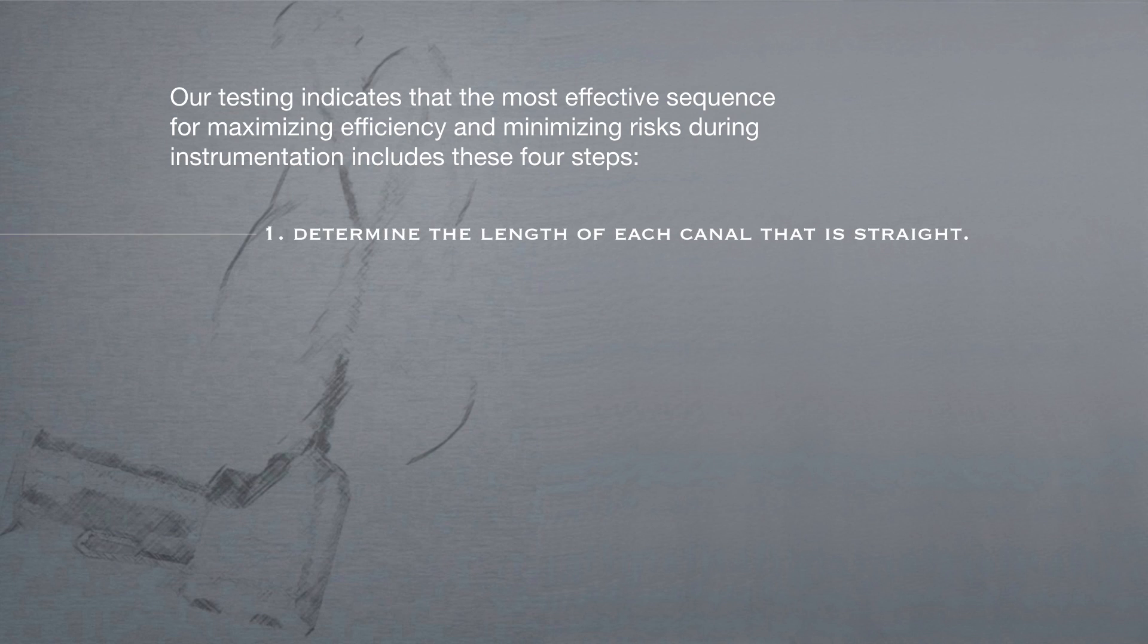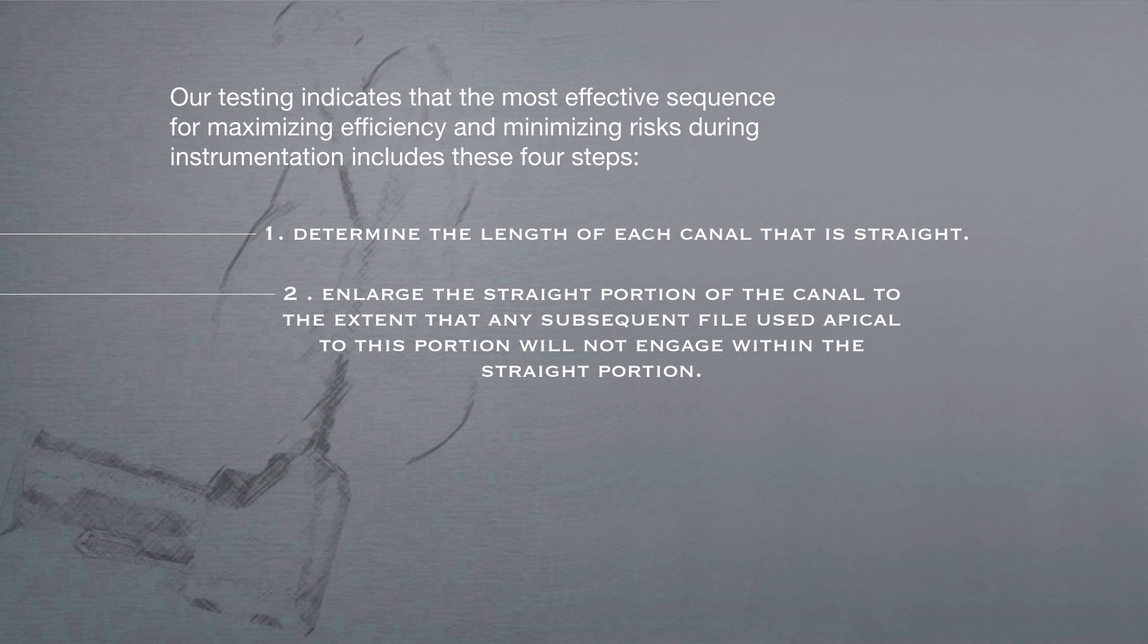Determine the length of each canal that is straight. Then, enlarge the straight portion of the canal to the extent that any subsequent file used apical to this portion will not engage within the straight portion.